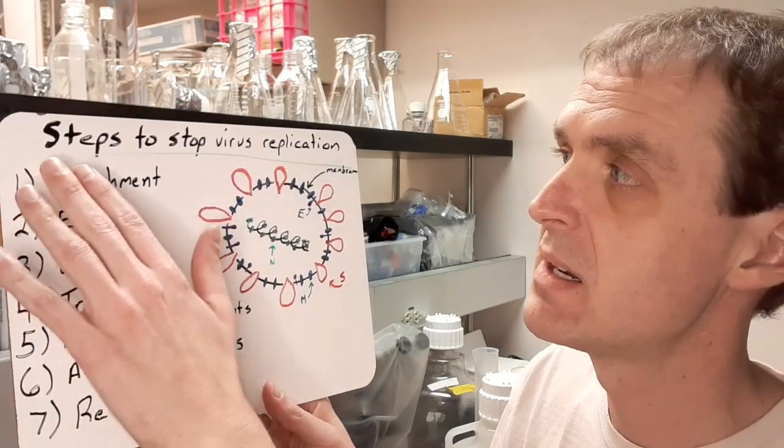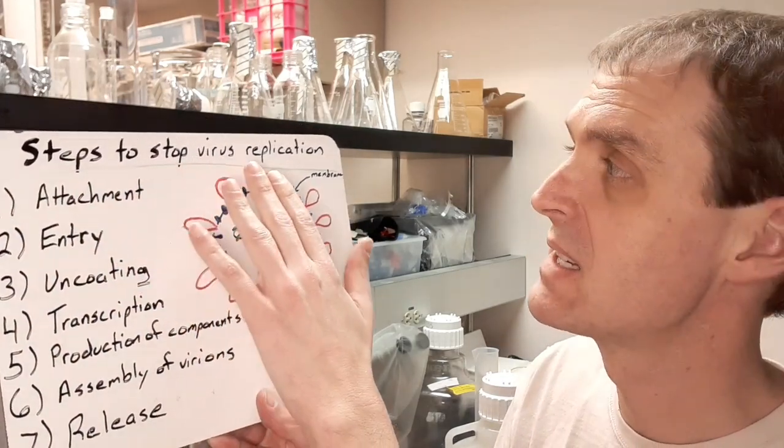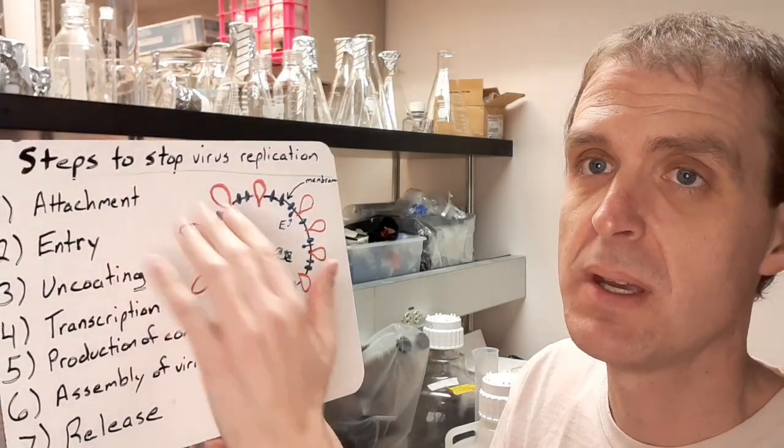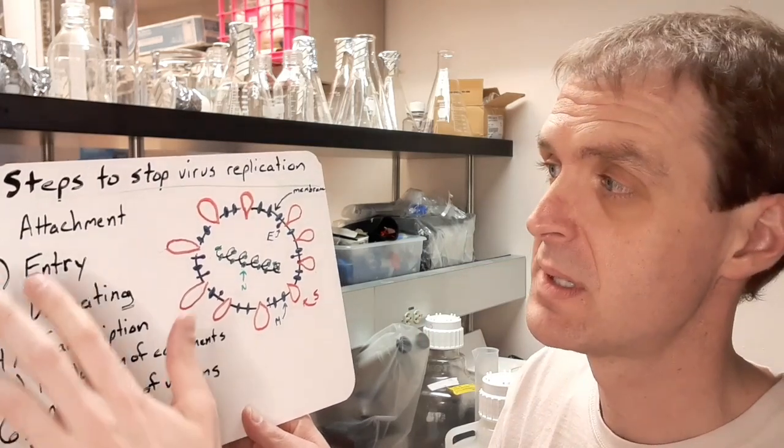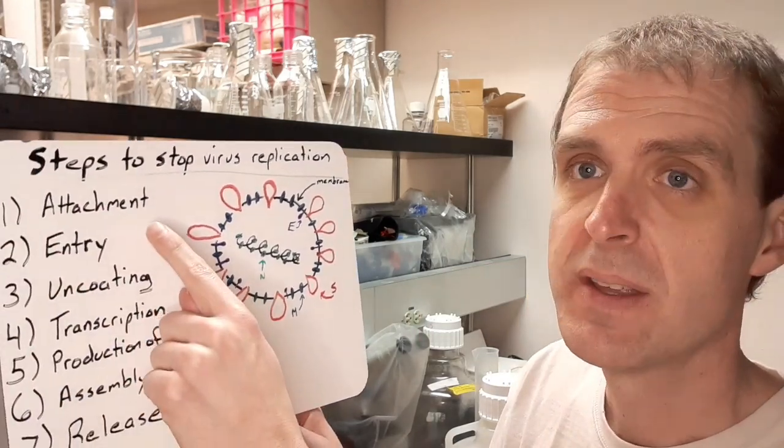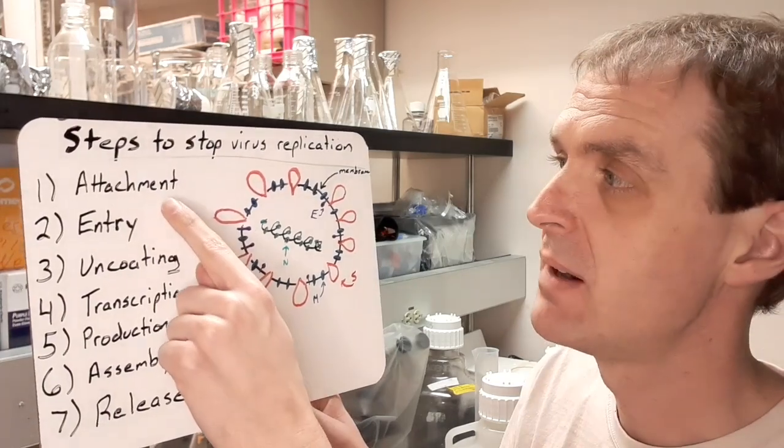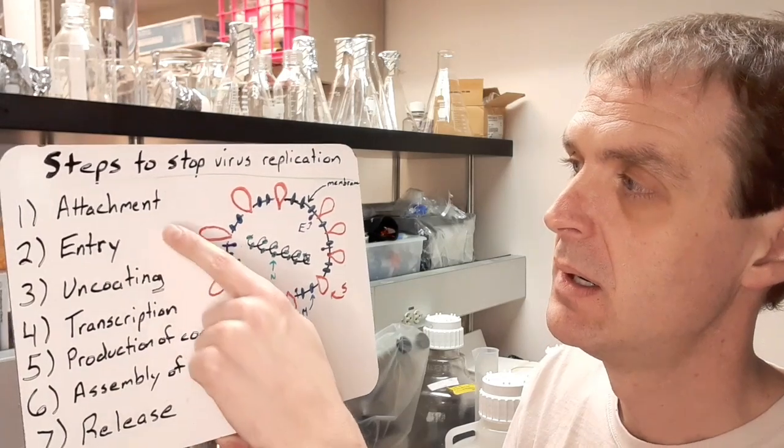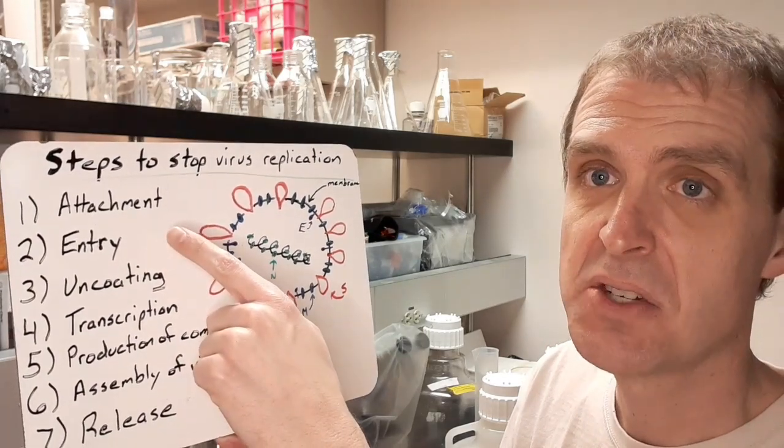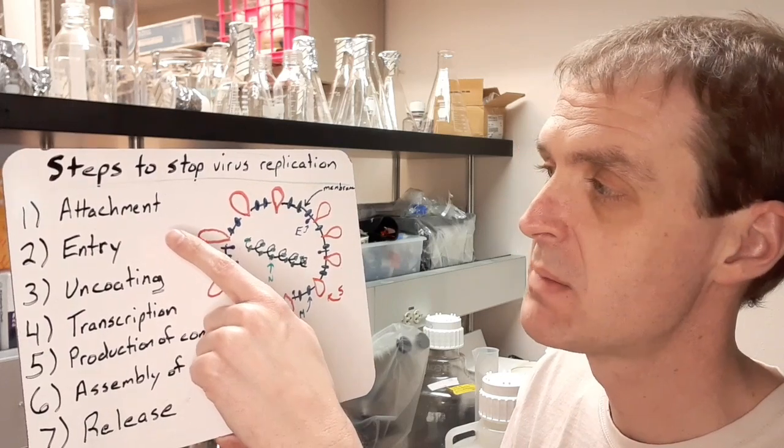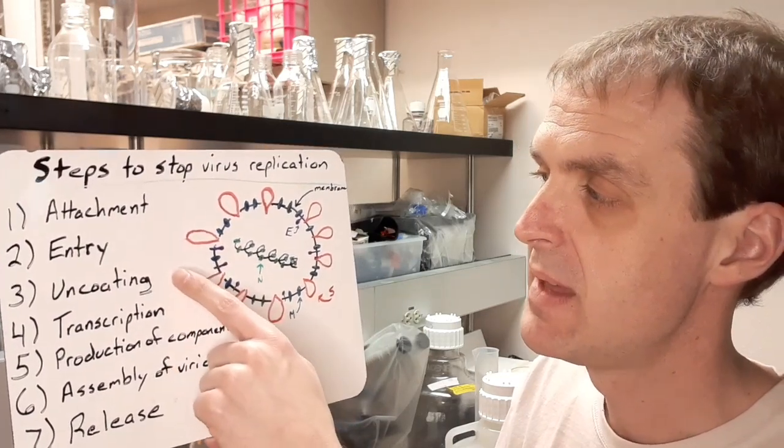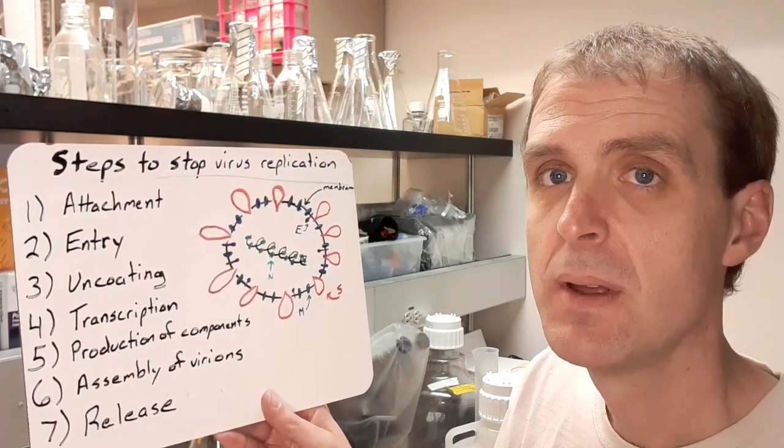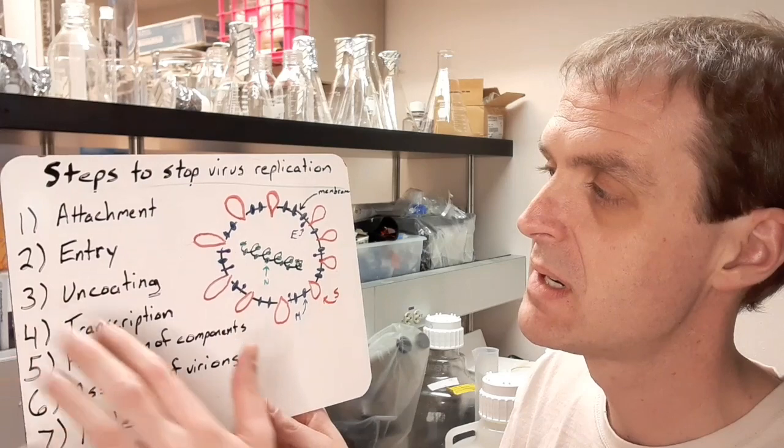I'm going to point to the fact that the steps that a virus takes to replicate are also steps that you can stop with therapy to stop a virus infection. The steps of a virus infection are seven of them. We have attachment, entry, so that's getting the virus genome into the cell, into the cytoplasm typically of the cell. And then uncoating is to release the genome from the proteins that it's associated with.